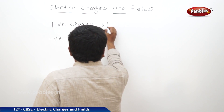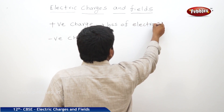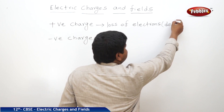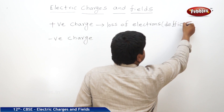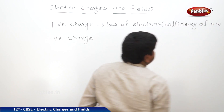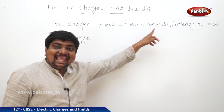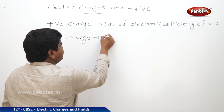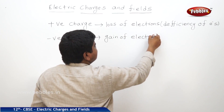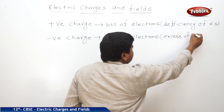So, positively charged body means loss of electrons. Positive charge means deficiency of electrons. Negative charge means gain of electrons, or excess of electrons.